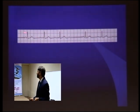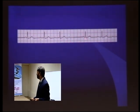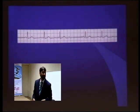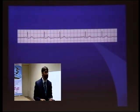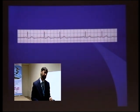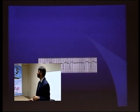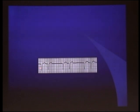Wenckebach — because the PR is prolonging and there is a dropped beat. You have 2 P waves before this QRS. That is Wenckebach, and that is Mobitz type 2.